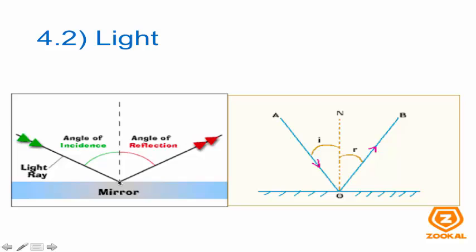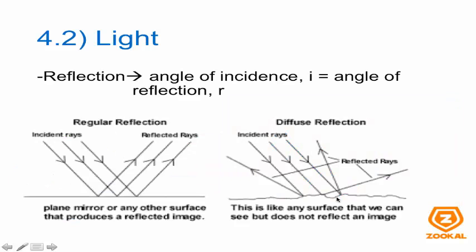This dotted line here is known as the normal. The angle of incidence is the angle between this normal and the incident ray. The angle of reflection is simply the angle between the normal and the reflected ray. This diagram puts everything in simple algebraic form: I is the angle of incidence, R is the angle of reflection, and N is the normal. For reflection, the angle of incidence I is always equal to the angle of reflection R.